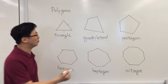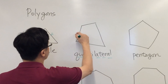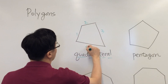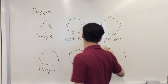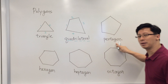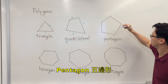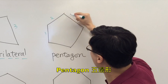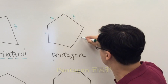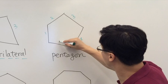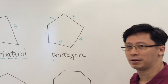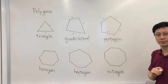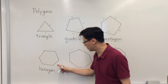This one is a pentagon — it has five sides: one, two, three, four, five.